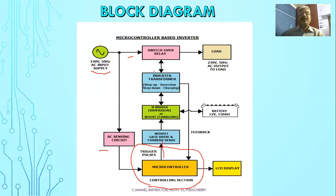After the switchover, DC supply is converted into AC supply and goes to the load. In the AC supply mode, the inverter transformer is in step-down mode and the battery is charged through the charging circuit.